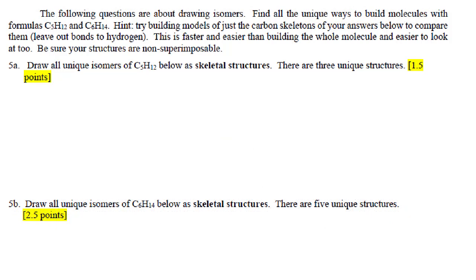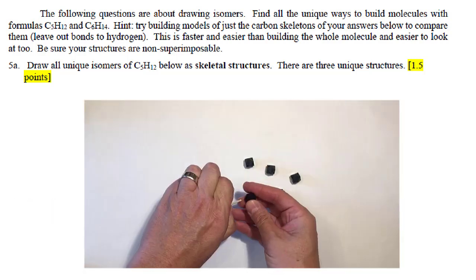This next question deals with drawing isomers, and it asks you to find all the unique ways to build molecules with formulas C5H12 and C6H14. The hint says try building models of just the carbon skeletons of your answers below and compare them. This will allow you to rotate them and quickly tell if they're the same. Remember, molecules that can be rotated and superimposed are the same. We're looking for unique types of each. There are three unique isomers of C5H12, and I'm asking you to draw them as skeletal structures. I'll go through this question with the model kit.